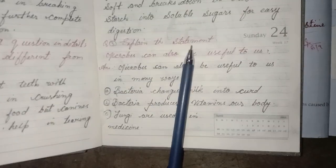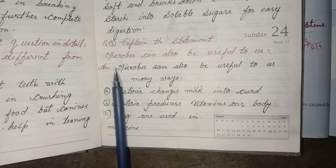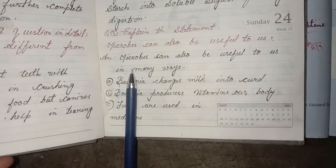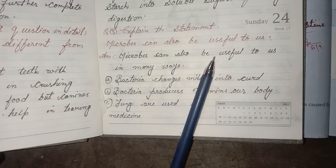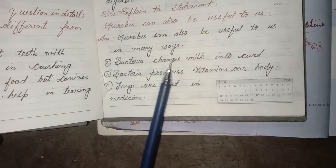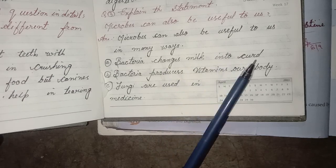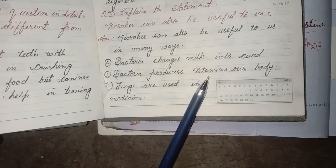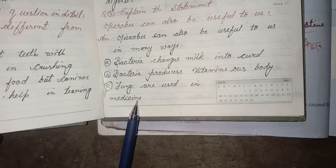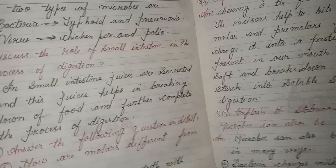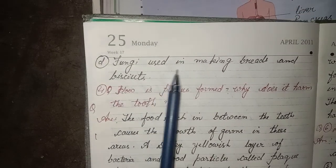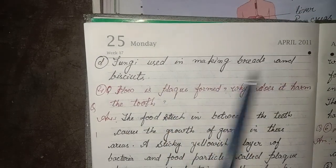Third question: explain the statement — microbes can also be useful to us. Answer — microbes can be useful in many ways. A — bacteria changes milk into curd. B — bacteria produces vitamins for our body. C — fungi are used in medicine. D — fungi are used in making breads and biscuits.